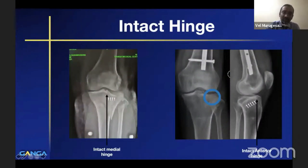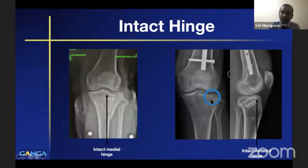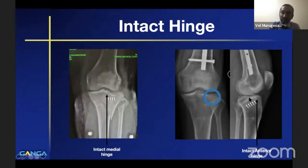The hinge can be intact medially, where we find continuation of trabeculae between the rest of the bone and the depressed fragment. The entire depression can also occur in the anteroposterior sagittal plane, where the tibial plateau articular surface is not clearly seen in the AP view but a depression is seen in the lateral view, with the intact hinge on the anterior side.